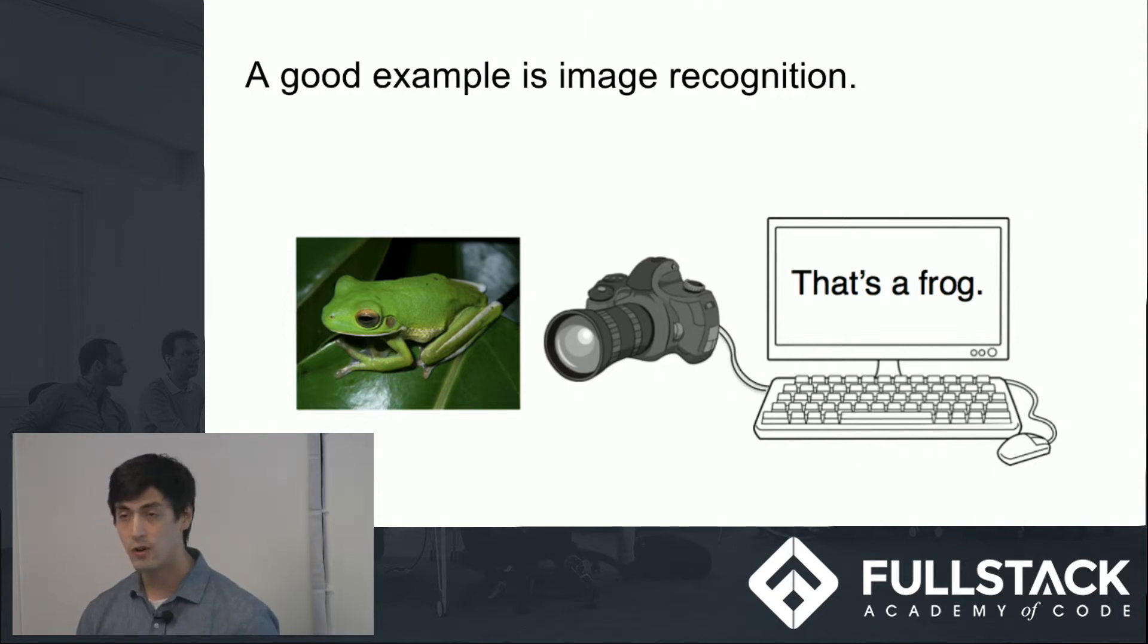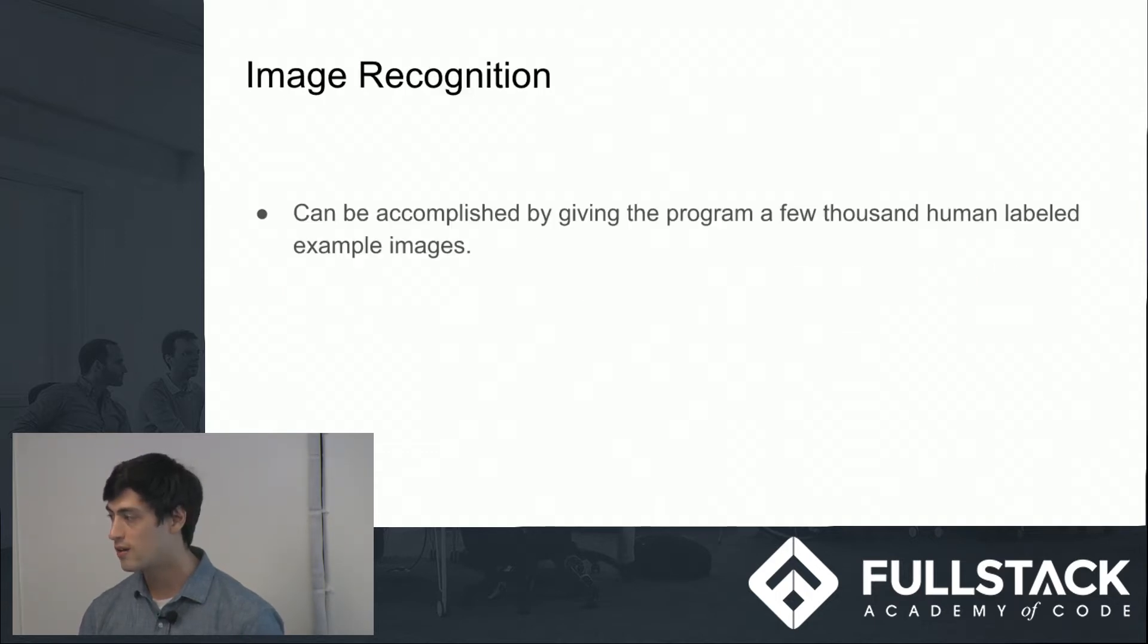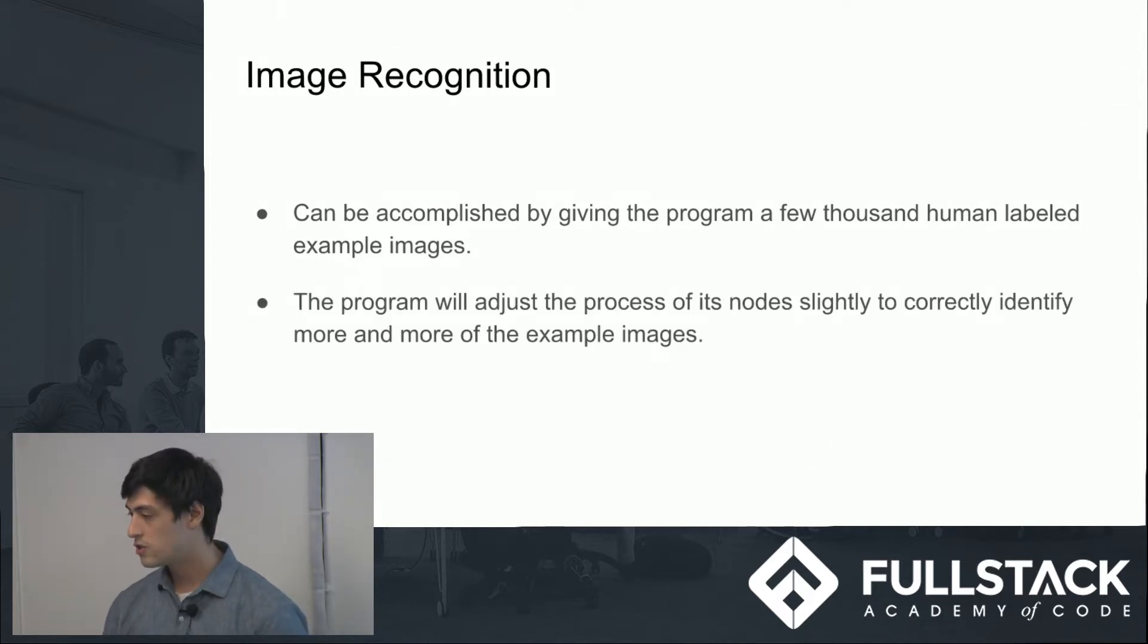But the machine or the neural network needed to learn how to do that. And so a limit of good neural networks is what data is already out there. Image recognition, for instance, requires a library, a couple thousands of images, in this case of frogs labeled by humans as frogs and not frogs, to train the neural network because neural networks will start off as being relatively dumb or untrained. And so the program will adjust how these nodes are functioning until it can correctly identify more and more of the example images in a similar way to how a genetic algorithm works.